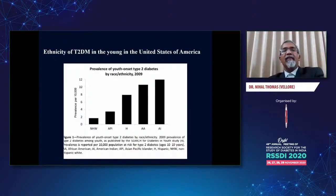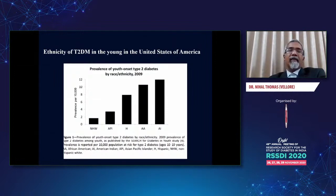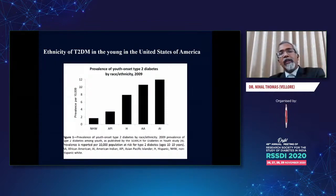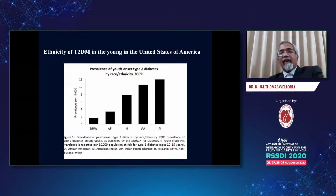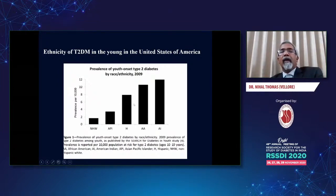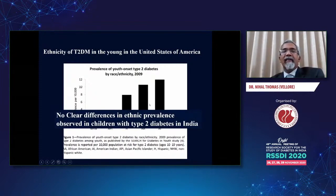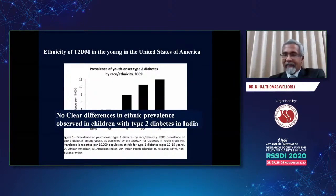This study from the United States shows very clearly that when you talk about young-onset type 2 diabetes, there are huge differences between Native American Indians versus other populations — the white Caucasians and Hispanics. You can see very different prevalences per 10,000 population. Having said this, there is no clear difference in ethnic prevalence observed in children with type 2 diabetes in India.